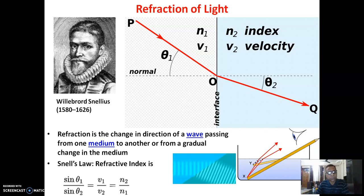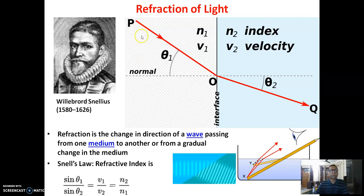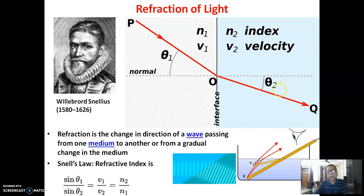Snell's law is associated with the refractive index of various materials: sin θ₁ / sin θ₂ = V₁ / V₂ = N₂ / N₁, where N₂ and N₁ are the refractive indices of the two materials. In the diagram, the incident light forms an angle theta with the normal, and when moving into a denser medium, the light bends toward the normal.